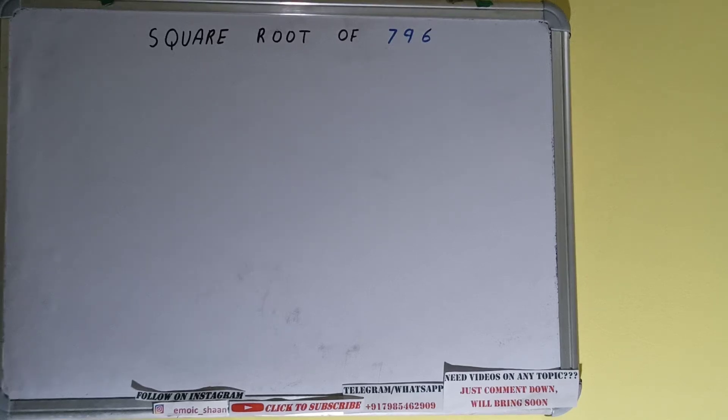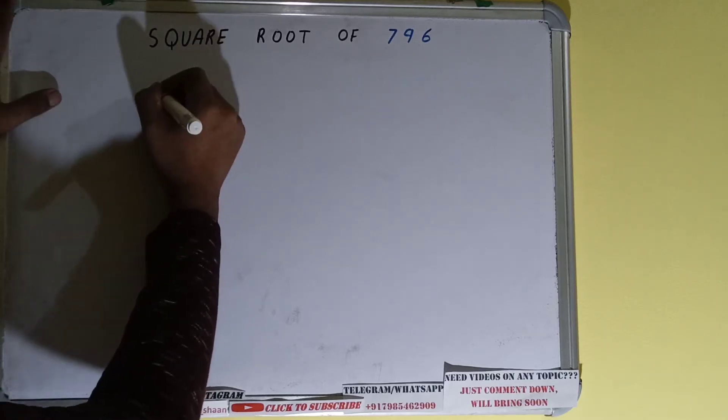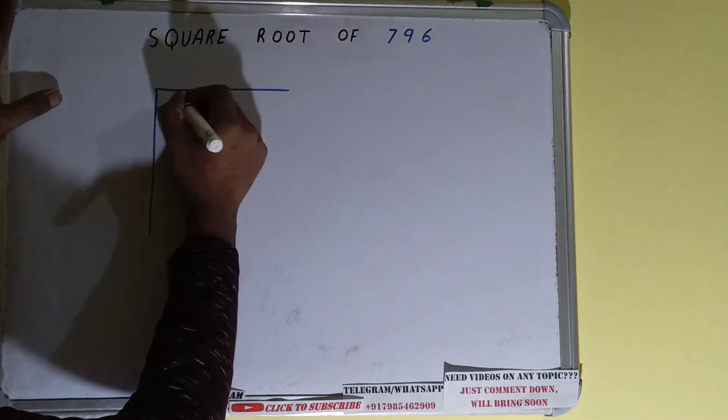Hello friends, in this video I'll be helping you with the square root of the number 796. So let's start. We'll be using the division method. First, we need to write the number like this.